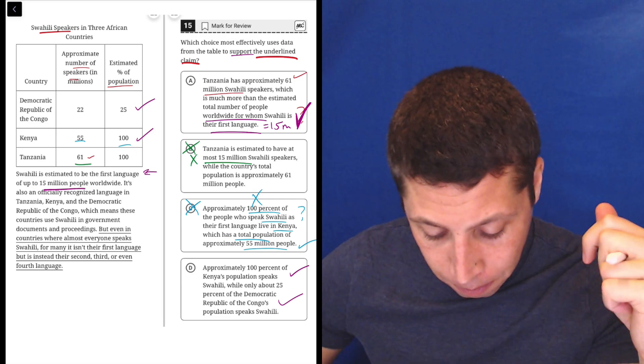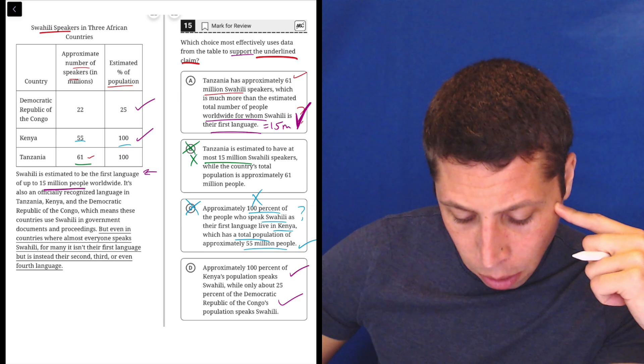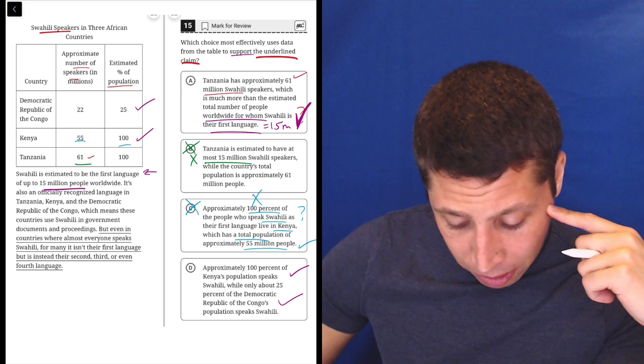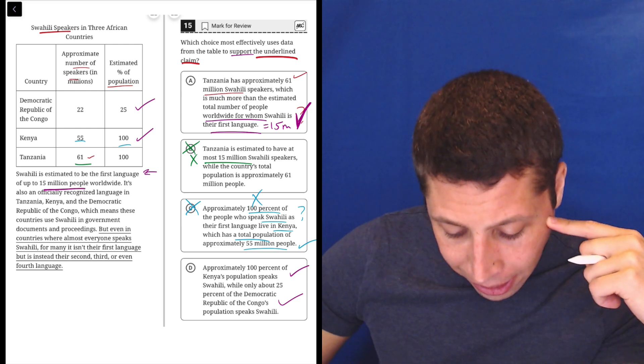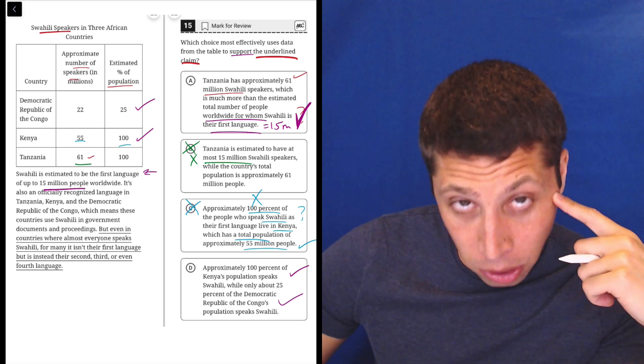This is more about main ideas now and which choice supports the main idea of the students. Let's get to this underlying piece. It's also an officially recognized language in Tanzania, Kenya, and the Democratic Republic of the Congo, which means these countries use Swahili in government documents and proceedings. But even in countries where almost everyone speaks Swahili, for many, it isn't their first language, but is instead their second, third, or even fourth language.